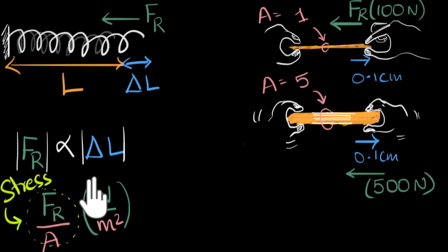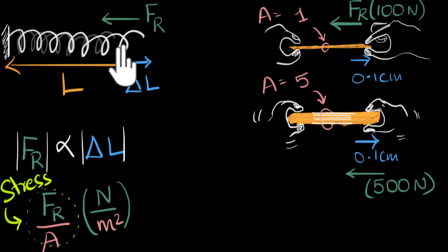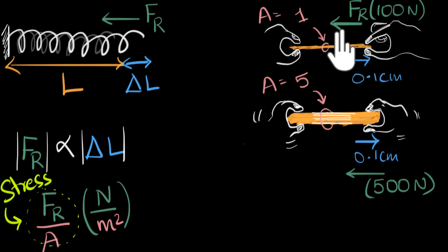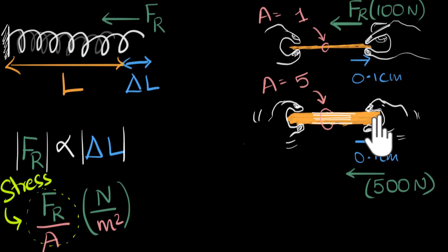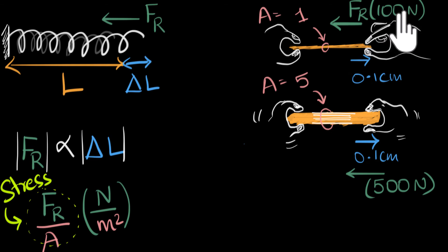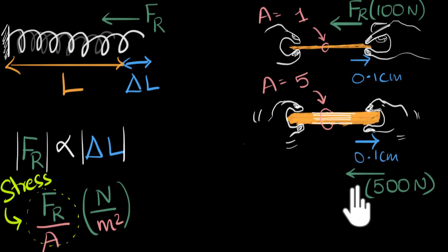Just as the restoring force in springs tells us how hard the spring is trying to snap back, stress tells us how hard any material is trying to return to its original shape. In the two rubber band cases, although the restoring forces differ, the stress is the same — and therefore both rubber bands snap back in almost the same time. With five times the restoring force but also five times the thickness, each sub-band still exerts the same force. So stress, not restoring force, is the more accurate quantity to consider.